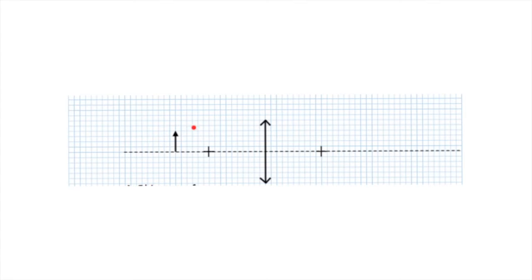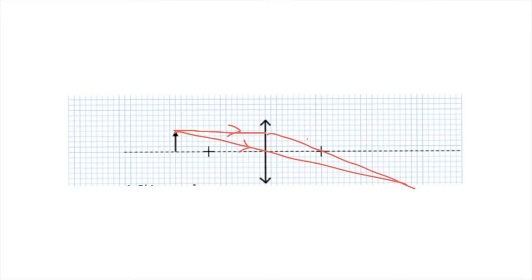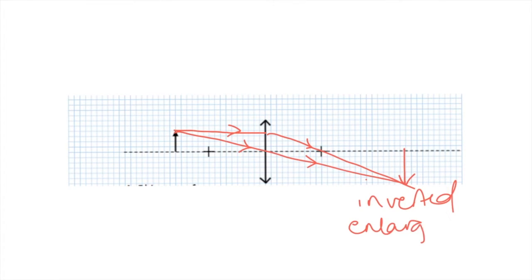This time our object arrow has moved in a little bit, so it should affect the image formed. Again, we're going to draw from the top of the object arrow a nice horizontal line to meet the lens, and then make it go through that focal point. Next step, we're adding a diagonal line straight through — add arrows to show the direction that the rays are going. And then where they cross, that's where our image is formed. Again it's below the line so we know that it's inverted. I've drawn this one a bit better — the image is bigger than the original arrow, which means we have a larger image formed. So it's enlarged. And because it's formed after the lens again, it's real. And an example of this is a projector.